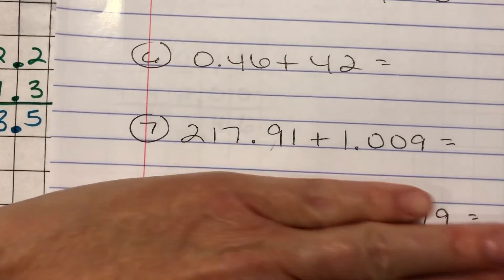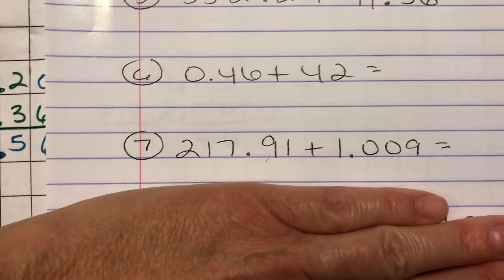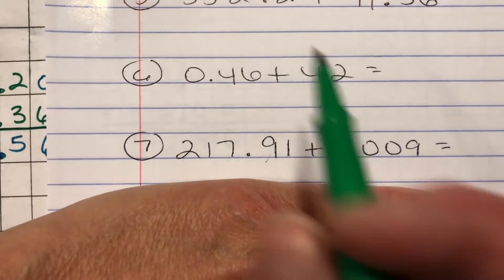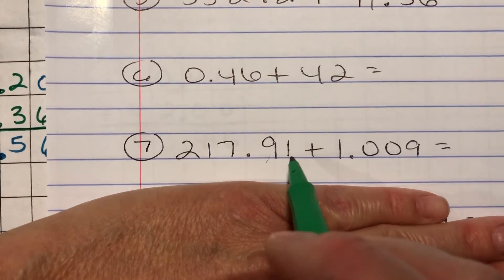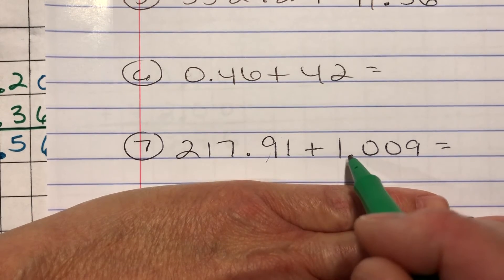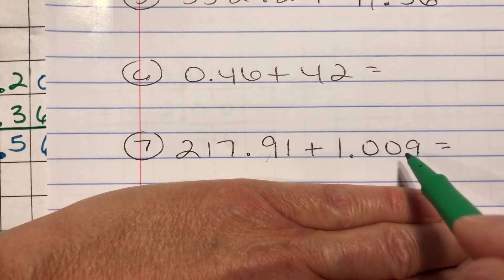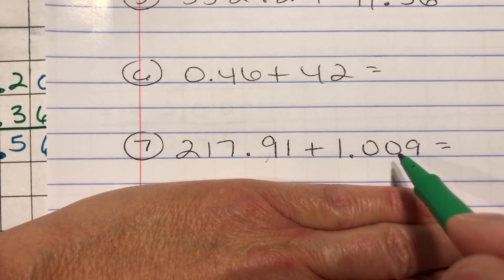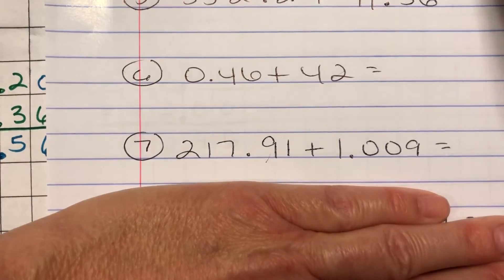Okay. For number seven, getting a little bit bigger. Well, lengthier. Not necessarily greater in value. So we have two hundred seventeen and ninety one hundredths plus one and nine thousandths. So set this up on your grid paper and press play when you're ready.